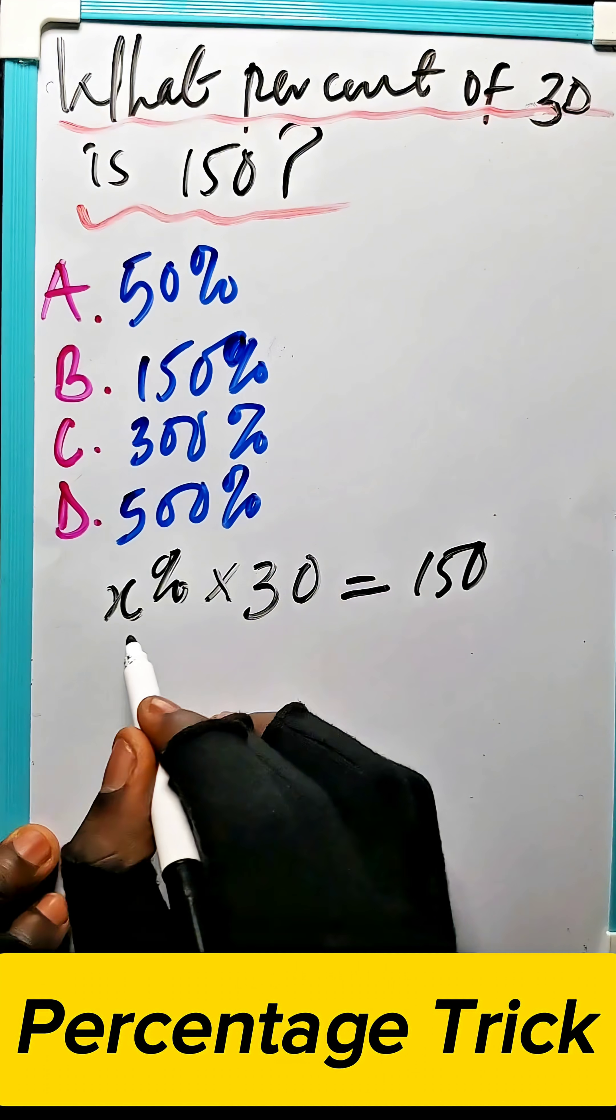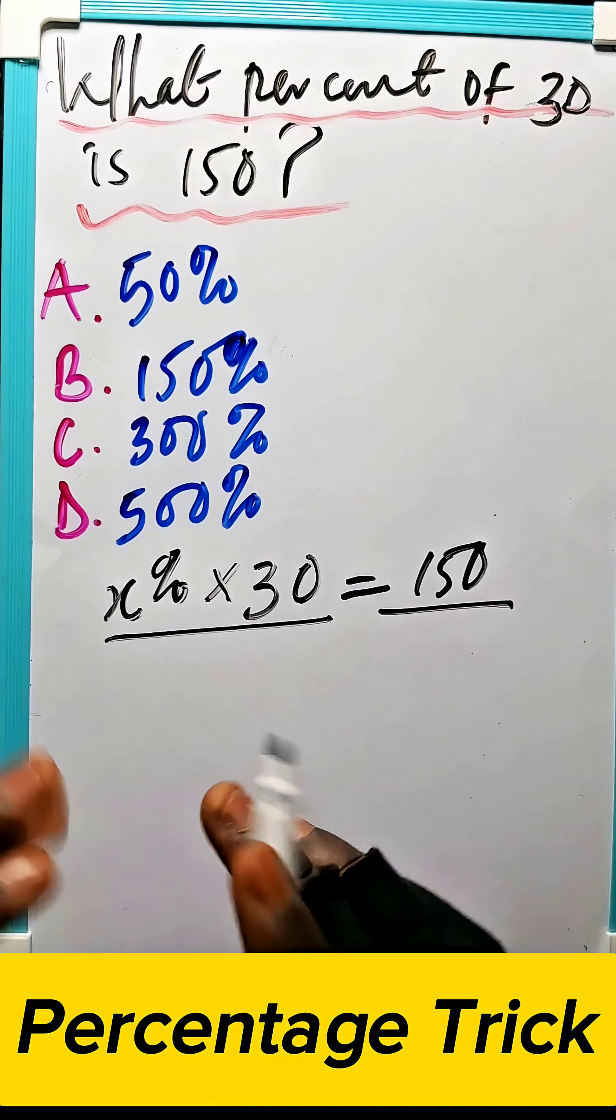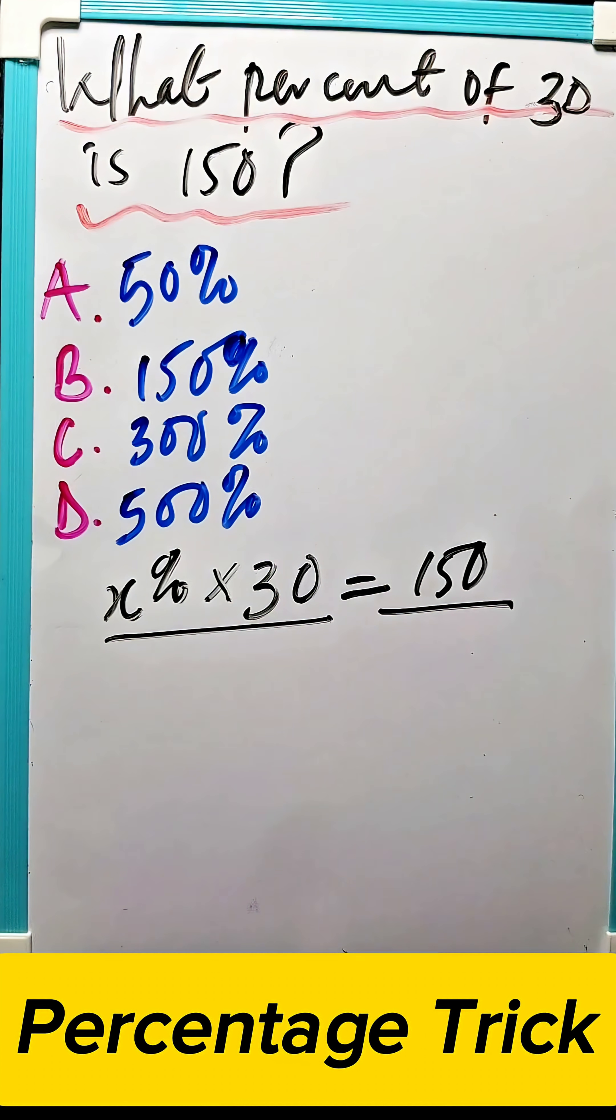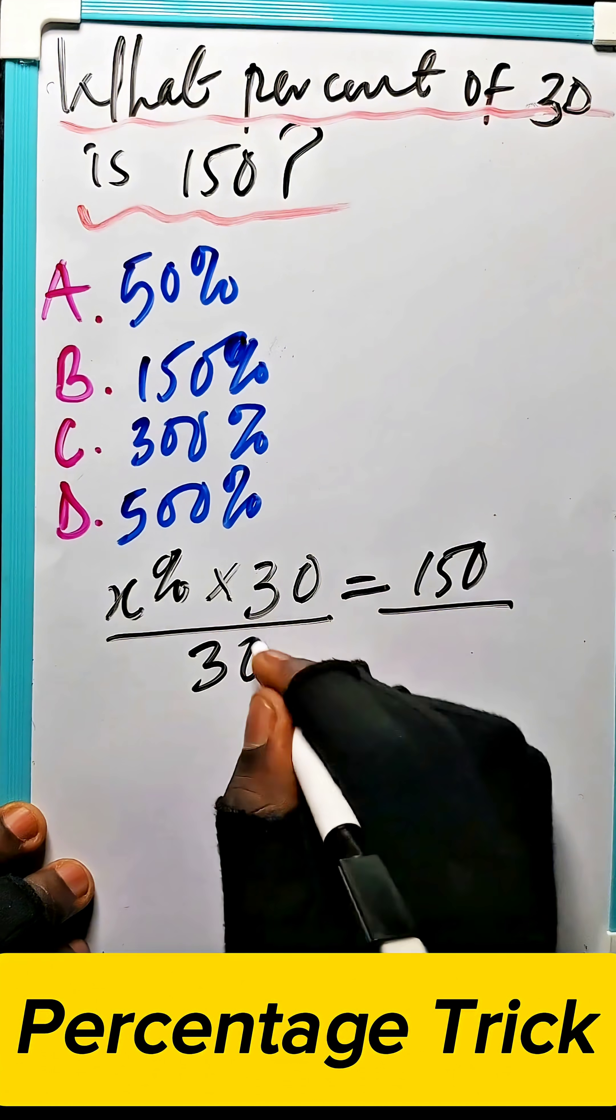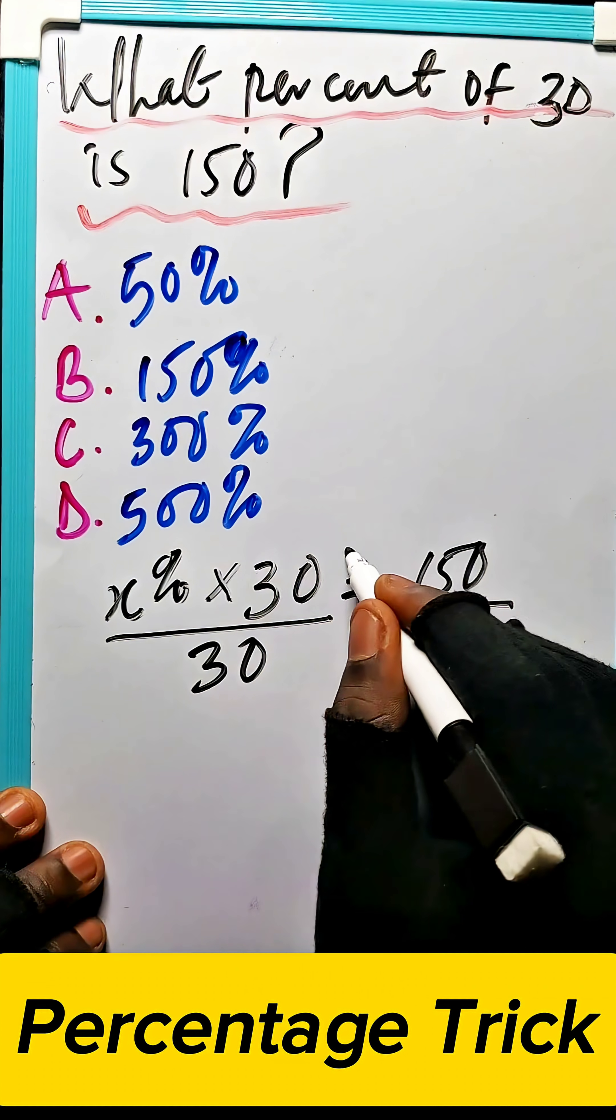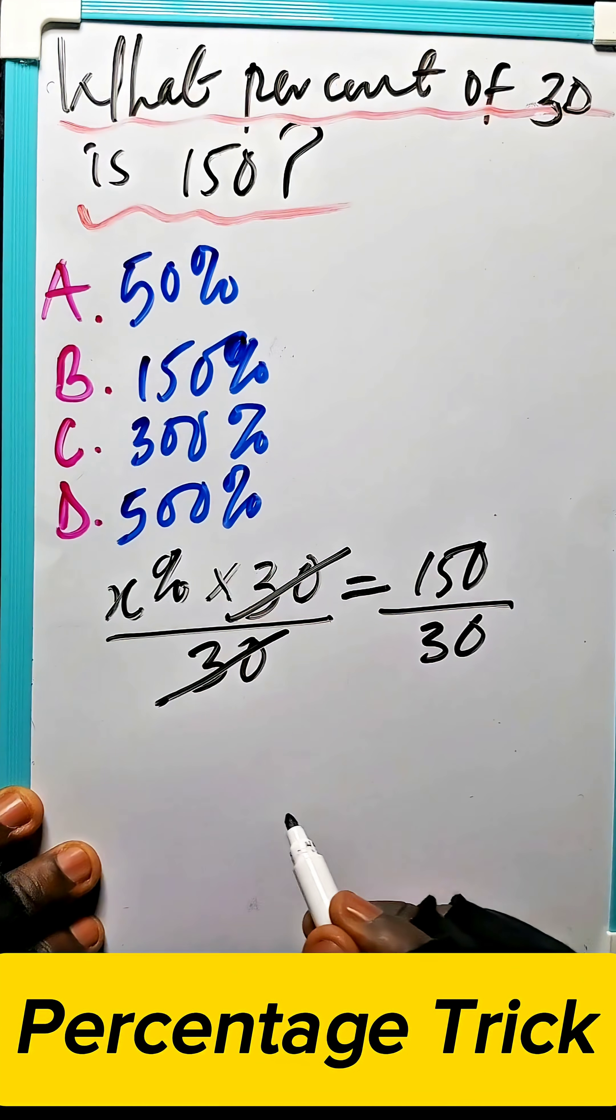Now to eliminate this 30, what you need to do is the opposite of multiplication is division. What you do in the left hand side, you must also do it in the right hand side. That is 30 divided by 30. Now this will cancel this.